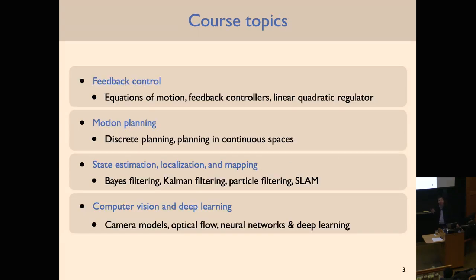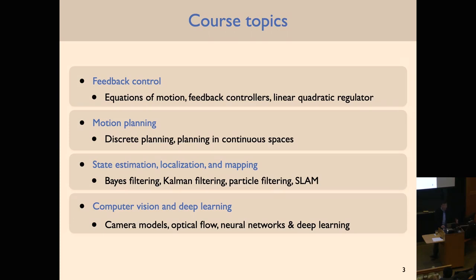These are the topics we covered in the course. We started with feedback control — equations of motion, feedback controllers, LQR — and how to control a quadrotor to hover. We then talked about motion planning: getting a robot from point A to point B without colliding with obstacles, covering discrete planning (feasible and optimal) and planning in continuous spaces. We then covered state estimation, localization, and mapping — Bayesian filtering and its variants. Finally, in the last module, we talked about computer vision, machine learning, and a bit of reinforcement learning.